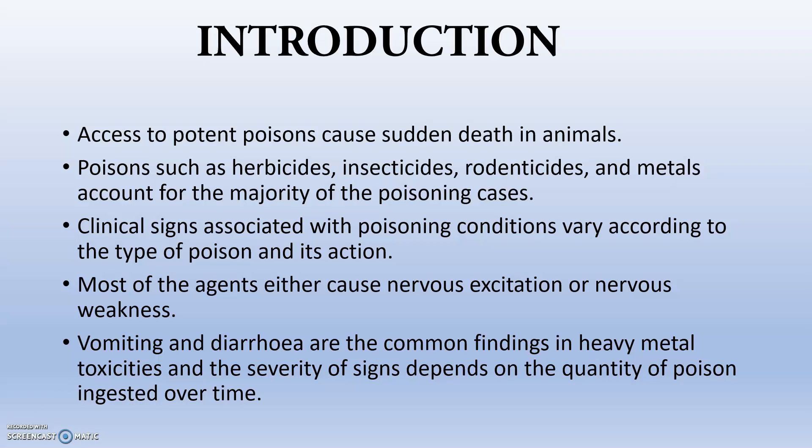Whenever an animal gets access to certain potent poisons, this can lead to death. Poisons such as herbicides, insecticides, rodenticides, metals, and paints account for the majority of poisoning cases found in the field. In most cases they will be causing nervous excitation, nervous weakness, or gastric irritation, bleeding, vomiting, and diarrhea.